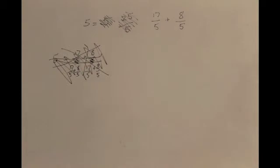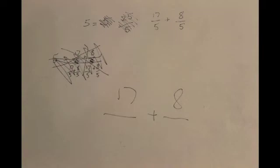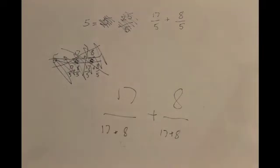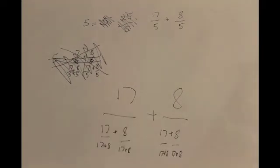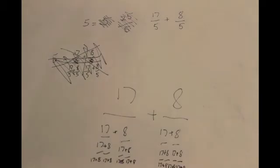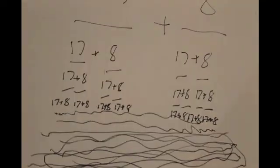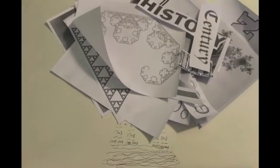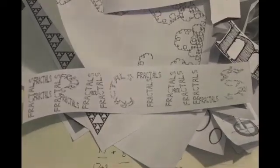Start out with 17 plus 8, and then instead of writing 5, put 17 plus 8 and 17 plus 8. And then again, 17 plus 8 plus 17 plus 8 and 17 plus 8. And this just keeps going indefinitely. And no matter how many times you do it, it will always equal 5. And that is the basis for a fractal.